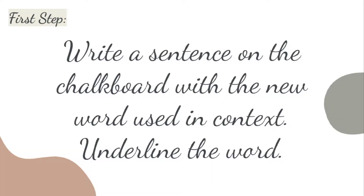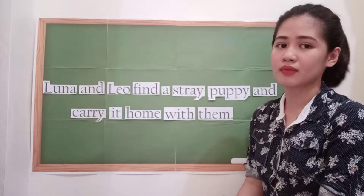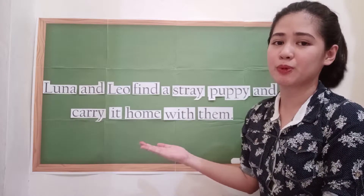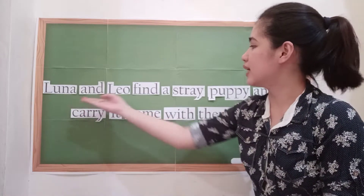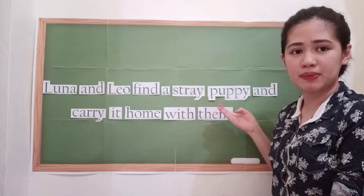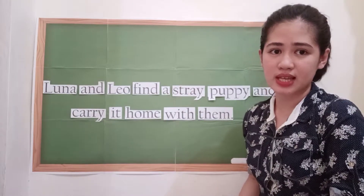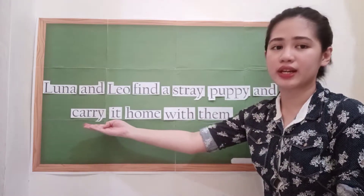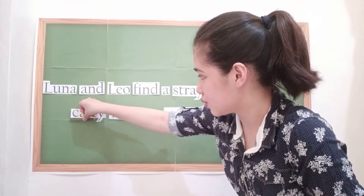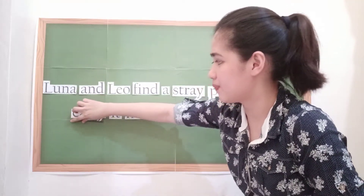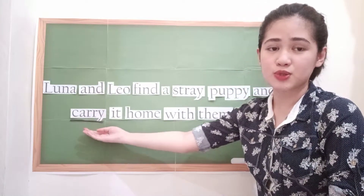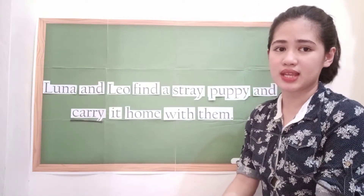First step in correcting sight word knowledge deficit: write a sentence on the chalkboard with the new word used in context, then underline the word. Here is a sample sentence containing the new word: 'Luna and Leo find a stray puppy and carry it home with them.' The new word in this sentence is the word carry. I will underline it to emphasize it so that students will be able to recognize that the new word is carry.